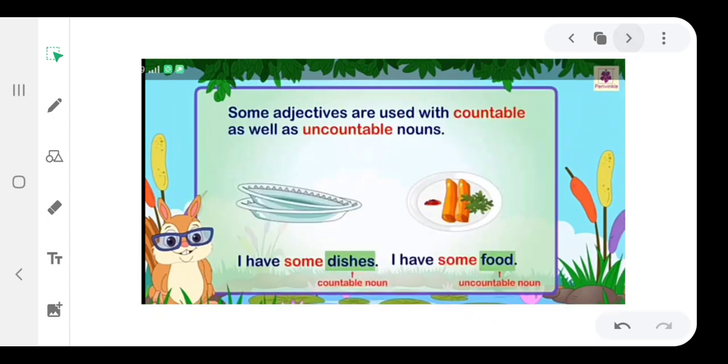Some adjectives are used with countable as well as uncountable nouns. I have some dishes—dishes, countable noun. I have some food—uncountable noun, food.